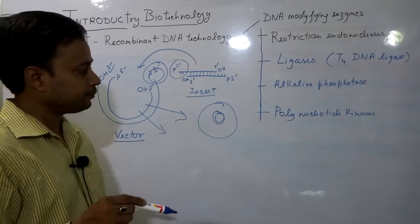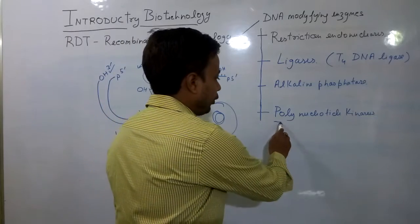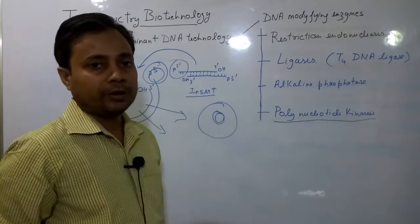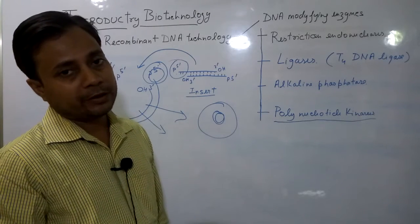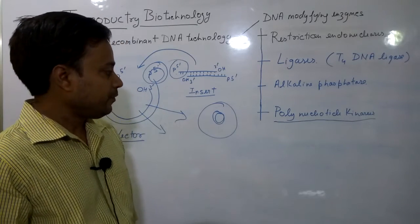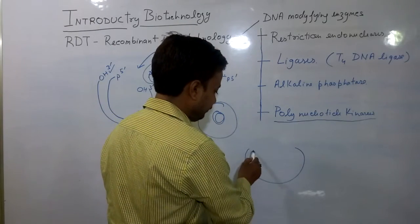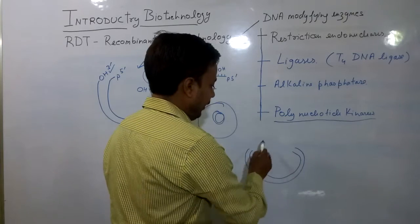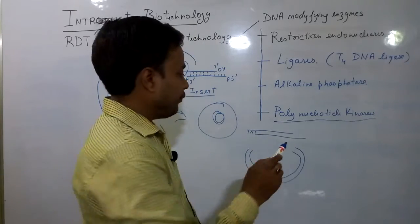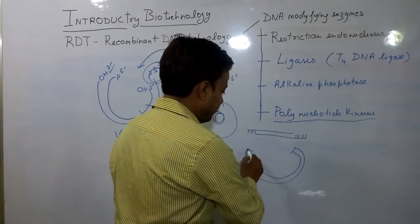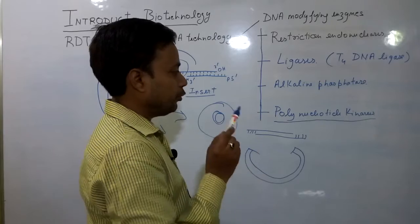Another enzyme is polynucleotide kinase, which is used for the addition of phosphate groups at the DNA ends. We need to add phosphate groups at the ends of DNA because in some cases where the vector molecule has a blunt end and the insert molecule has a cohesive end, we need to perform end-filling of the insert molecules in order to ligate them into blunt-ended vectors.